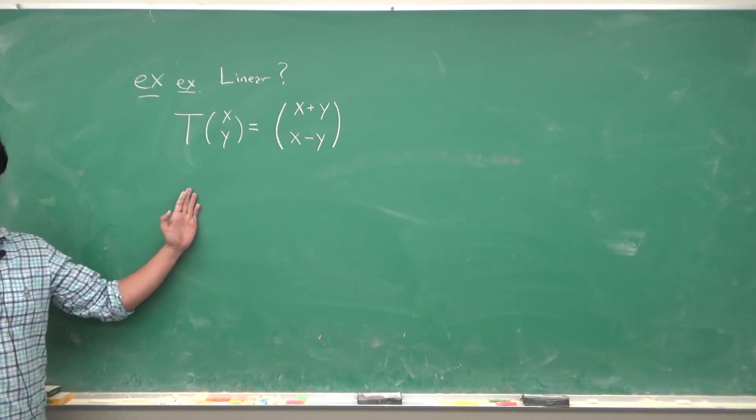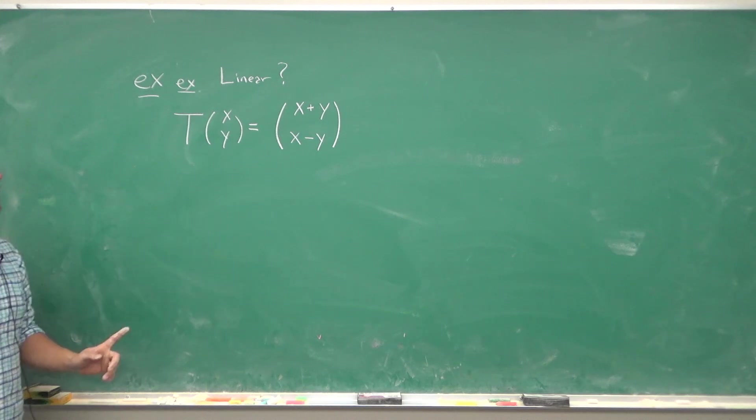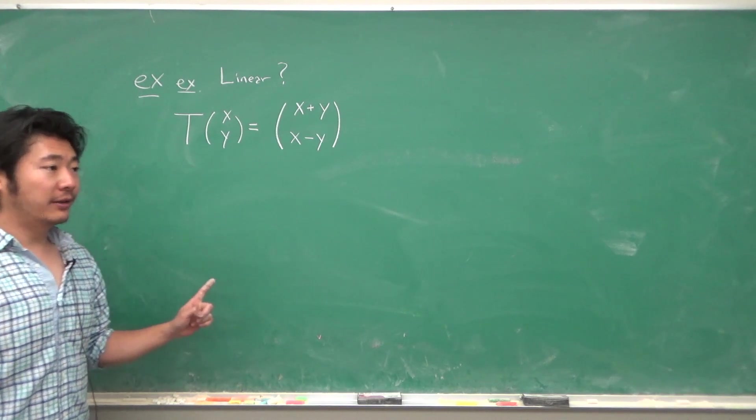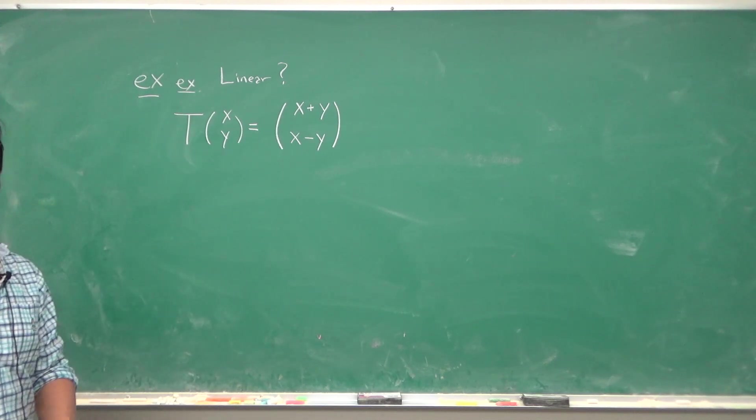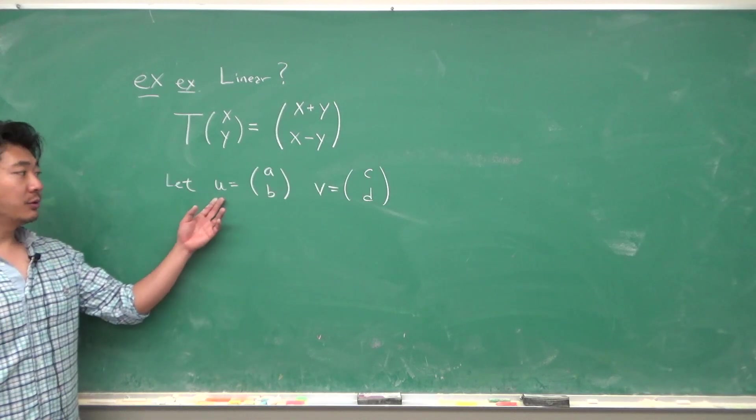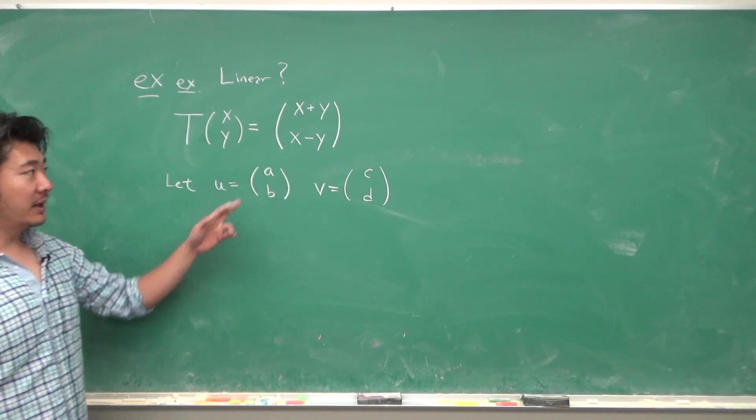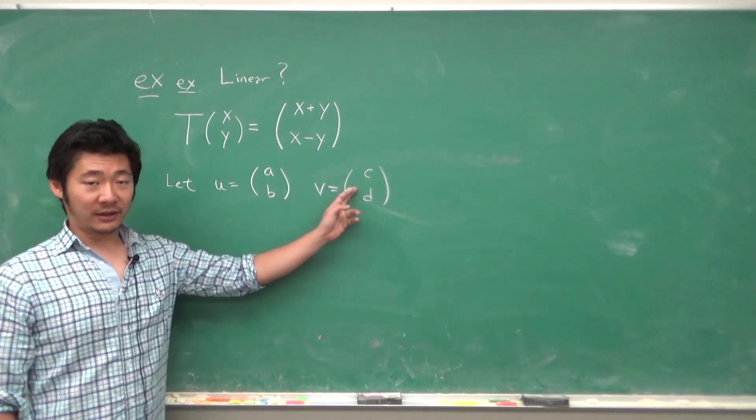Now let's look at this example. Let's see if this is linear. In order to show that something is linear, we must show that the properties hold for all vectors. So we'll want to do this a little bit more abstractly. So let u equal the vector (a,b) and v be the vector (c,d).